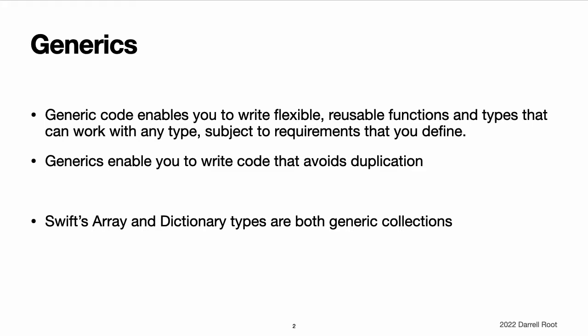In fact, you've been using generics throughout the language guide, even if you did not realize it. For example, Swift's array and dictionary types are both generic collections. You can create an array that holds int values, or an array that holds string values, or indeed an array for any other type that can be created in Swift. Similarly, you can create a dictionary to store values of any specified type, and there are no limitations on what that type can be.